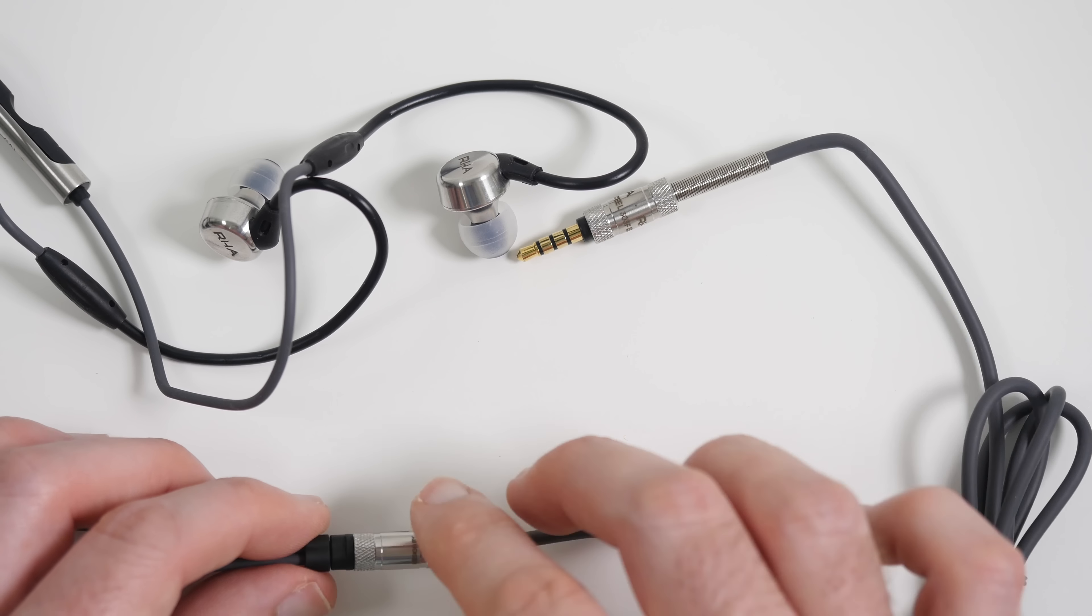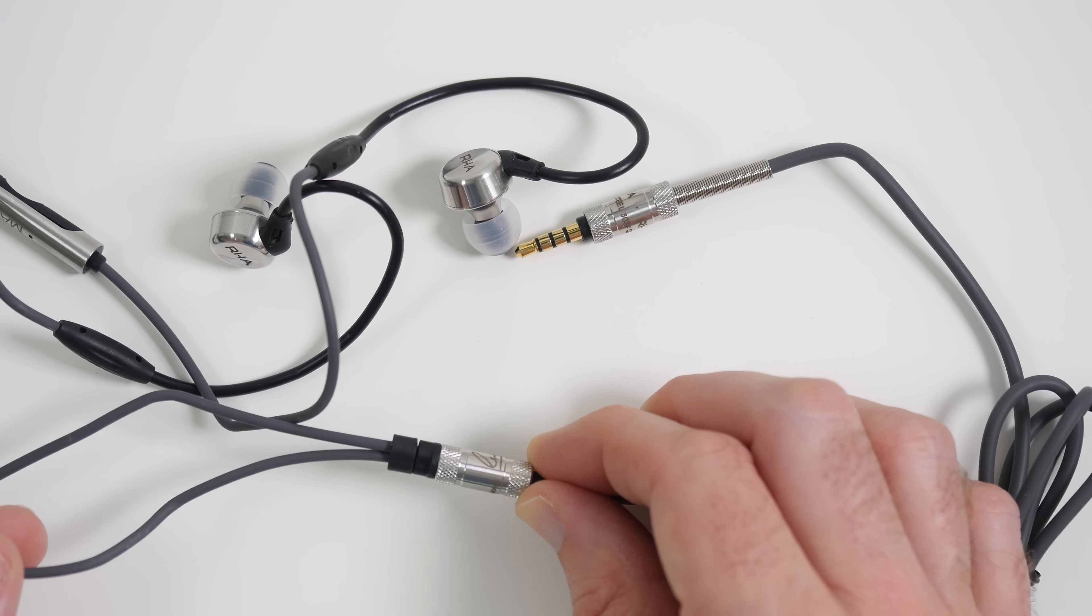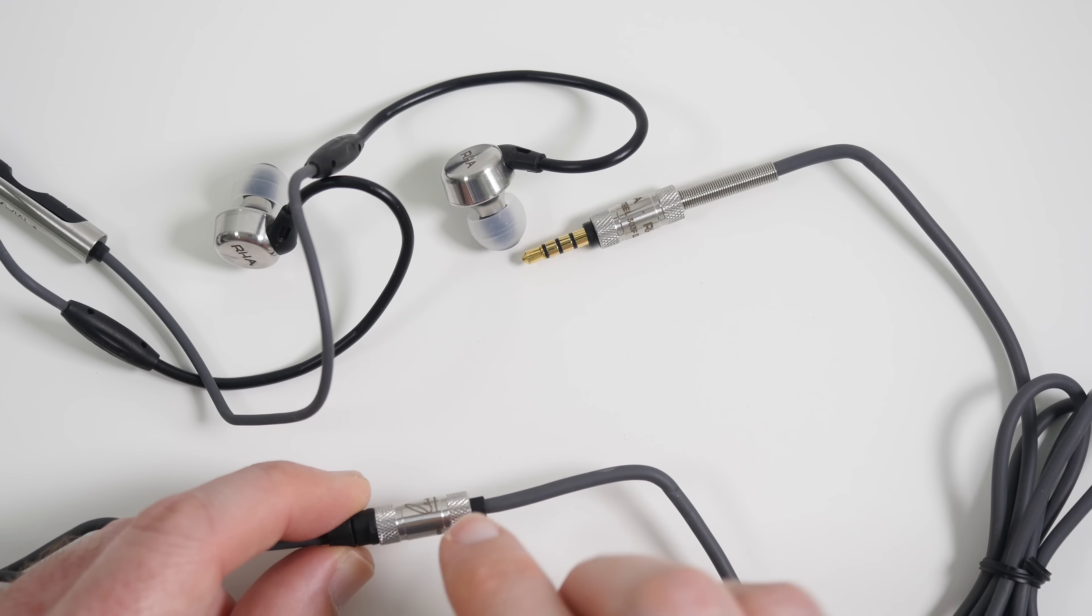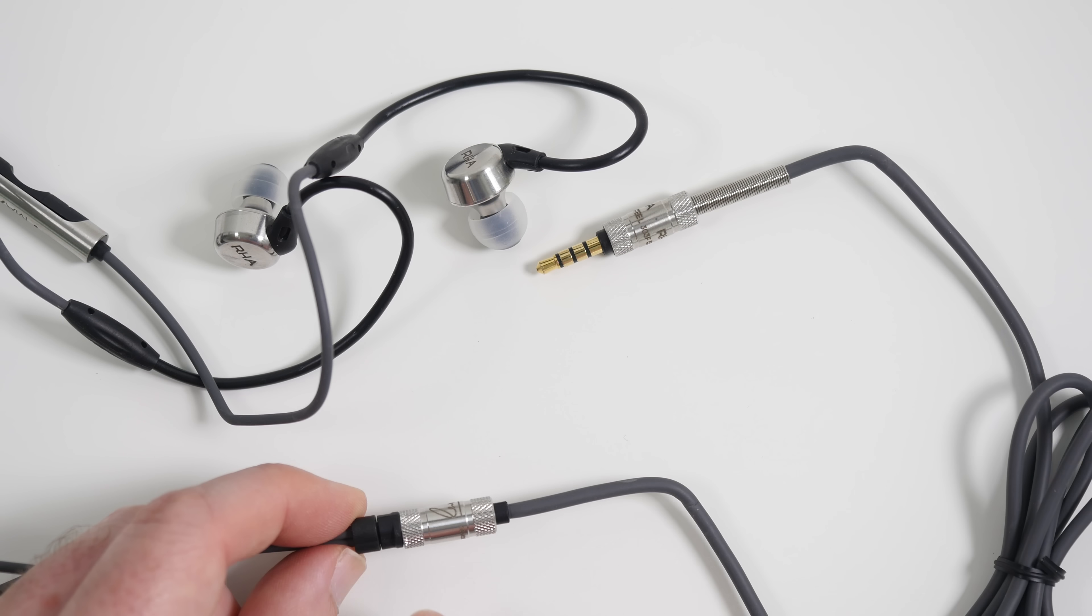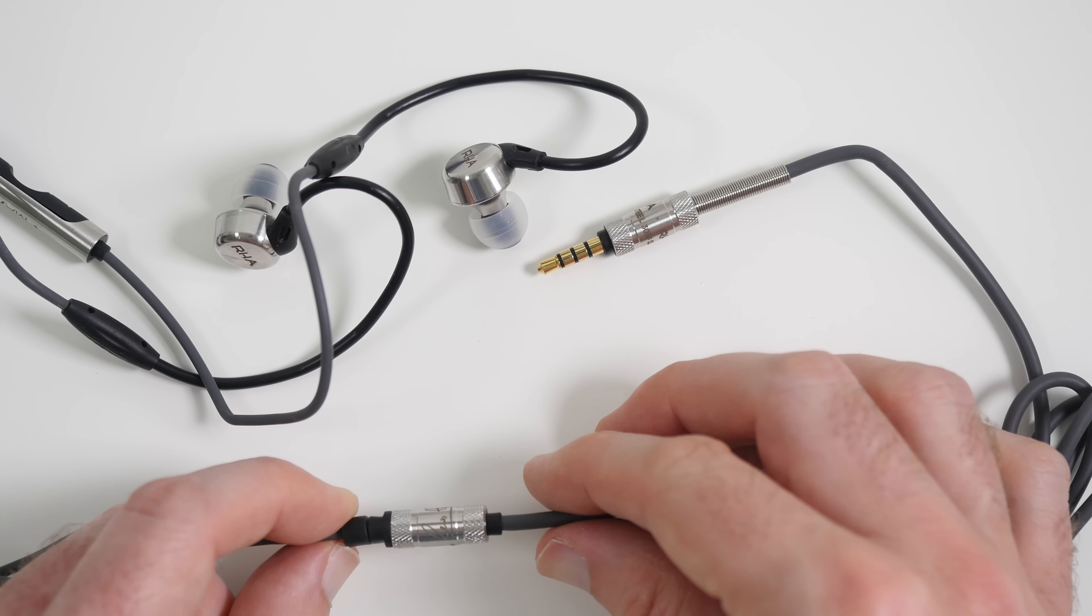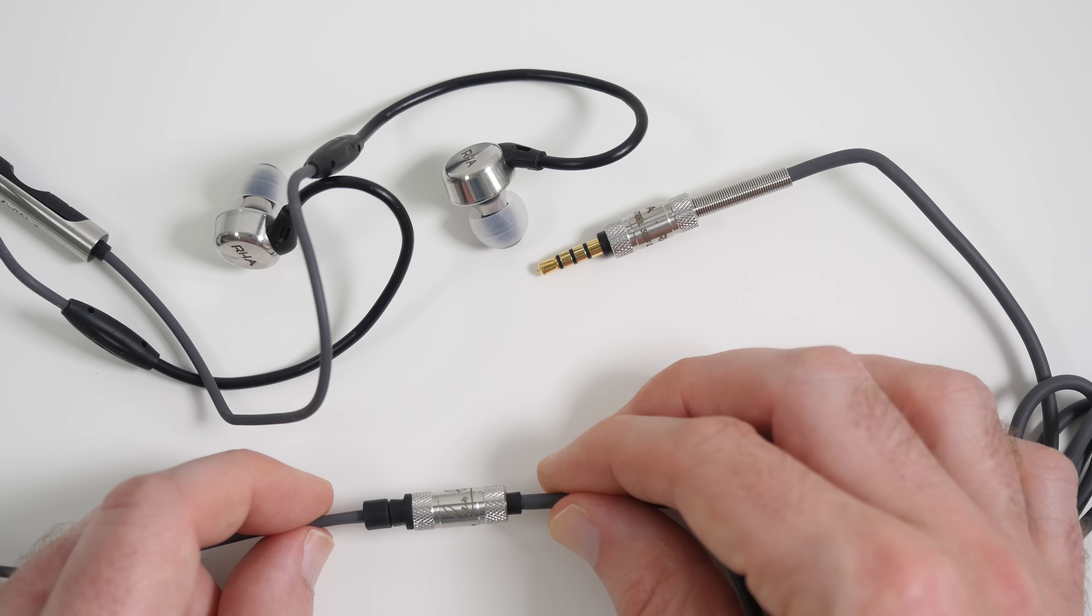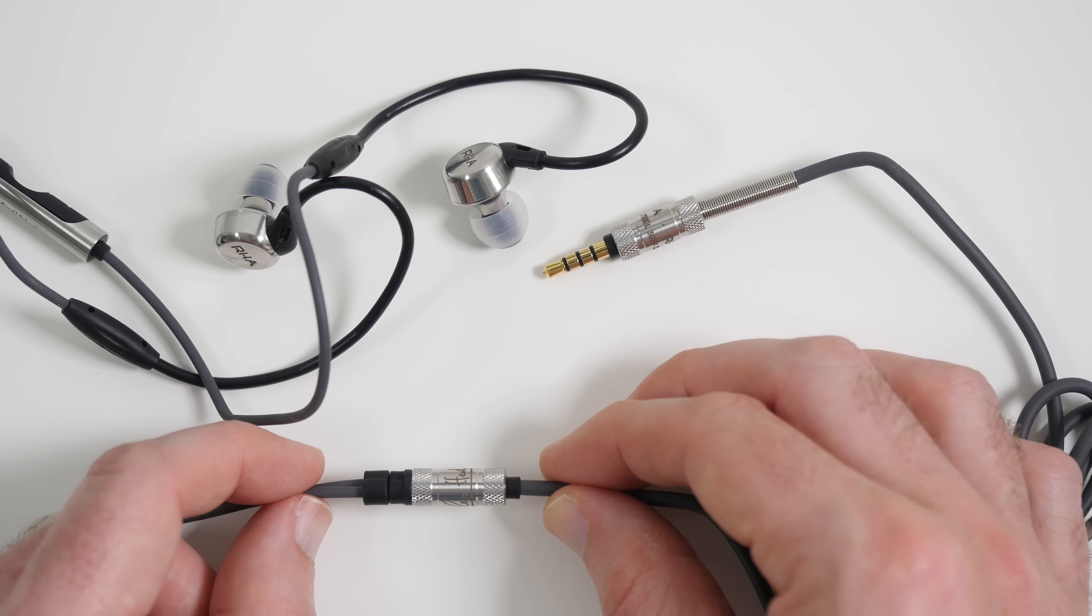And then as we come up to the split apart where the two wires go off to the separate earbuds, we've again got this really nice attention to detail, this nice barrel here made of metal and some branding across the center as well, just super quality.